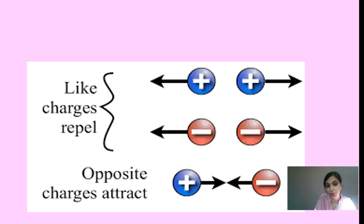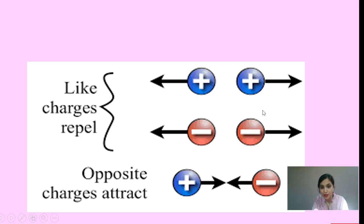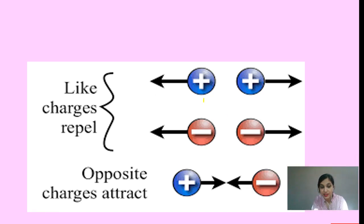Now, if we look at the properties — like charges repel and opposite charges attract. For example, if you look at a positive charge and another positive charge, they are like charges, so they repel each other and move further apart. Similarly, negative and negative charges also repel. But if you look at a positive charge and a negative charge together, they attract each other.